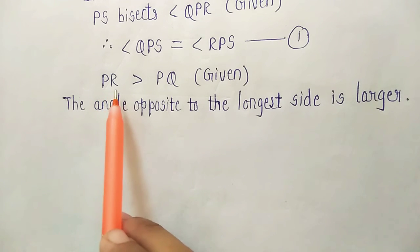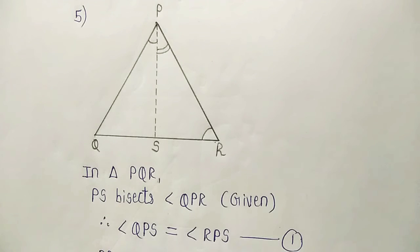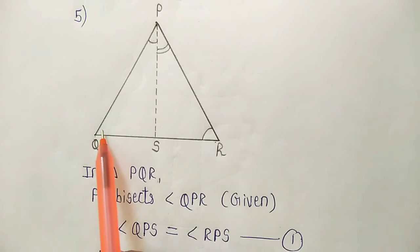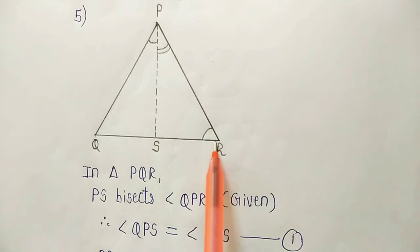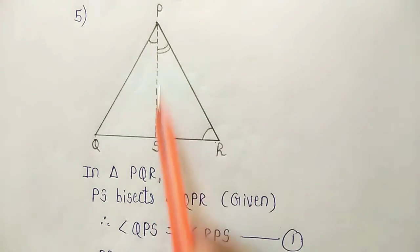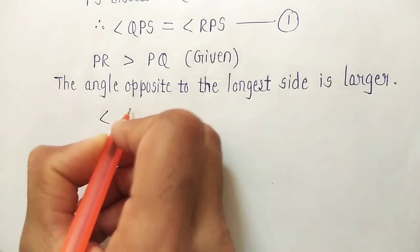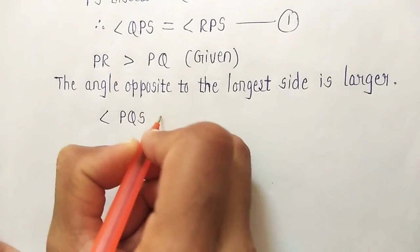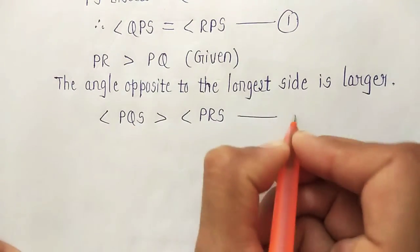Now we will make use of Theorem 7.6, which says that the angle opposite to the longest side is larger. Here we have PR as the longest side, so the angle opposite to PR will be greater than the angle opposite to PQ. Opposite to PR we have angle Q, so we write angle PQS, and opposite to PQ we have angle R, so we write angle PRS. The reason we write PQS and PRS is because in between we have bisector PS.